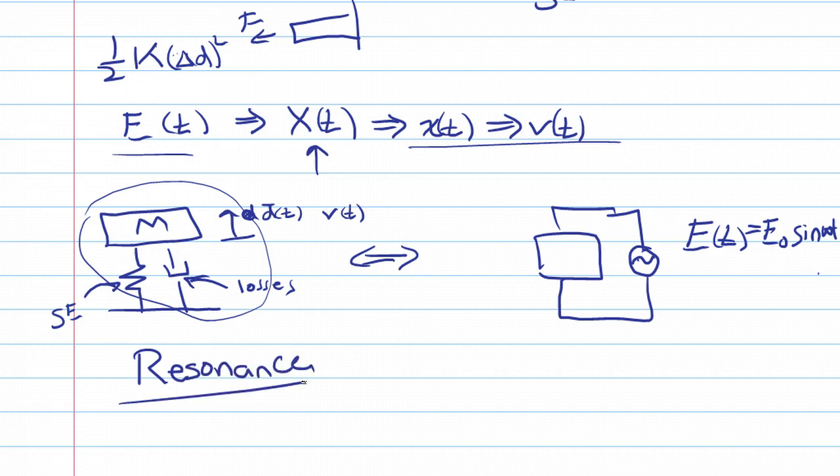In this condition of resonance, it occurs in both electrical systems. We know it as the LCR circuit. Basically, inductor, capacitor, and resistor circuit form a resonance system. Also, we have it in the mechanical system. We have a mass spring, and to represent the losses, we have a damper.